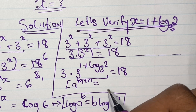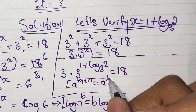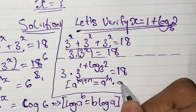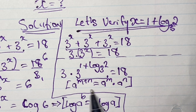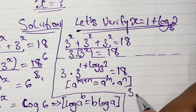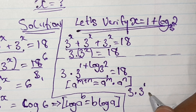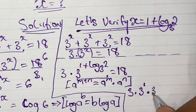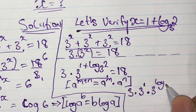Applying our index law — specifically that a to the power of (x times y) can be split — we write 3 times 3 to the power of 1 times 3 to the power of log base 3 of 2, and we said that all of that is equal to 18.